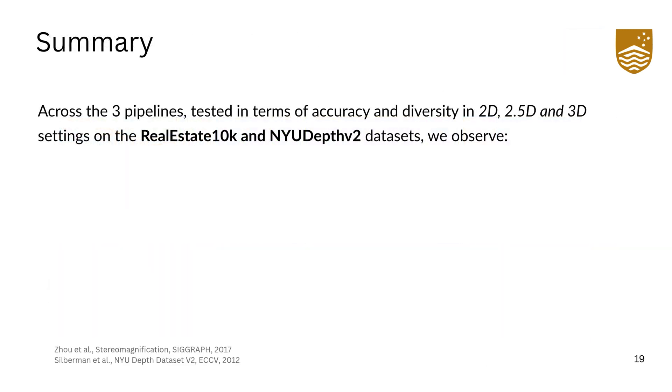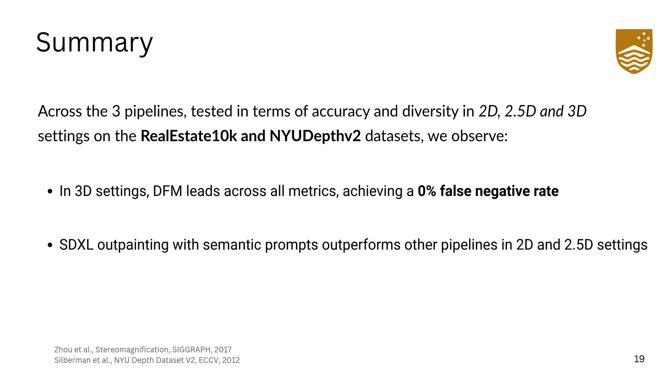Across the three pipelines tested in terms of accuracy and diversity in 2D, 2.5D, and 3D settings on the RealEstate10k and NYUDepthv2 datasets, we observe the following. In 3D settings, DFM leads across all metrics achieving a 0% false negative rate. SDXL outpainting with semantic prompts outperforms other pipelines in 2D and 2.5D settings. Certain VLMs exhibit competitive region-wise predictions in 2D with 2% false negative rates.